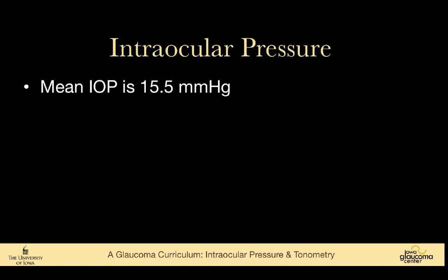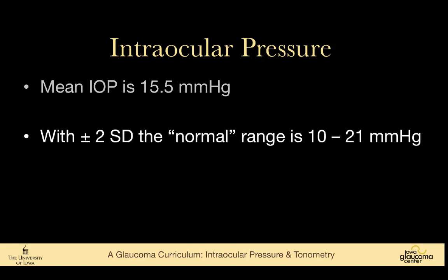Much of what I'm going to say over the next few minutes is covered in the talk on ocular hypertension. The mean intraocular pressure is 15.5 millimeters of mercury. If we take the normal plus or minus two standard deviations that we use for most features of the human body, that would make the normal range 10 to 21 millimeters of mercury.